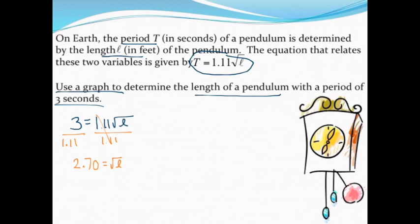To get the ℓ by itself, right now I have the square root, so to undo taking the square root of something, let's just square both sides. Once I square 2.70, I come up with about 7.29 as the length of ℓ. Since this was a story problem, we want to make sure we have a good label—it's measured in feet. So I have a pendulum that's about 7.29 feet long.